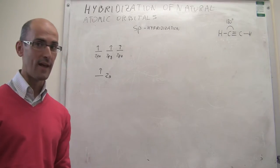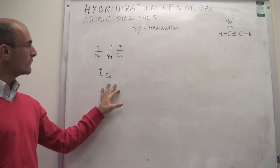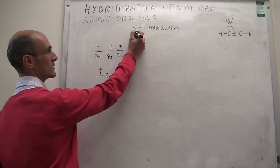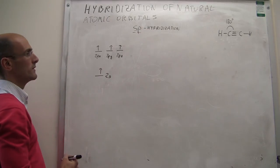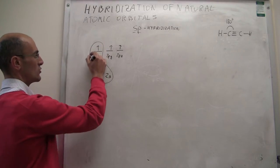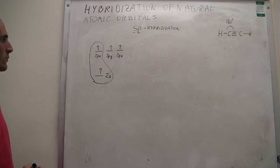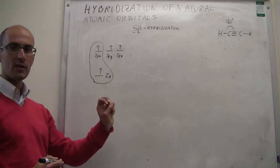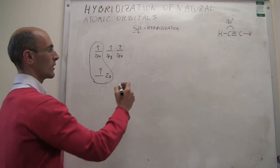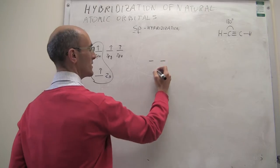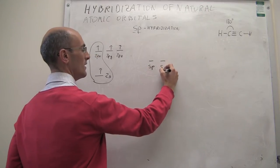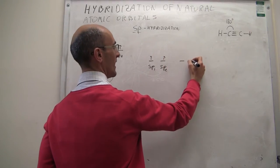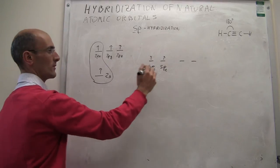This is the electronic configuration of carbon after the promotion step. In sp hybridization, what we actually do is mix the 2s orbital with one of the two p orbitals — in this case the 2px. Since you have two atomic orbitals mixed in, you're going to generate two hybrid orbitals, and we're going to call those sp. So the orbital electronic configuration will have two sp orbitals with one electron each, and then two of the 2p orbitals which are natural.